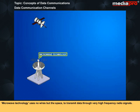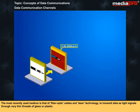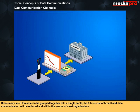Microwave technology uses no wires but the space to transmit data through very high frequency radio signals. If data is beamed to a communication satellite, the antenna acts as a reflector by accepting data from one point on the Earth and reflecting it to some other location. The most recently used medium is fiber optic cables and laser technology to transmit data as light signals through very thin threads of glass or plastic. A single glass fiber, as thin as human hair, can transmit as much as a dozen books with a thousand pages each in just one second. Since many such threads can be grouped into a single cable, the future cost of broadband data communication will be reduced.